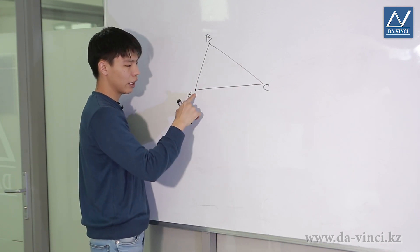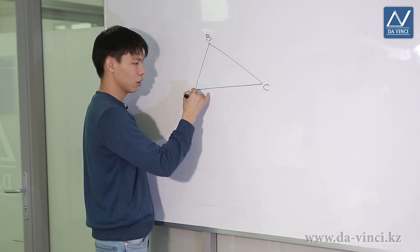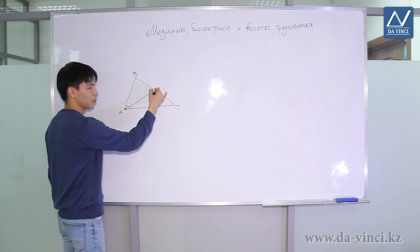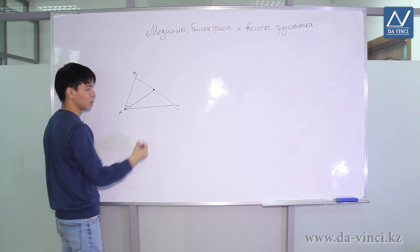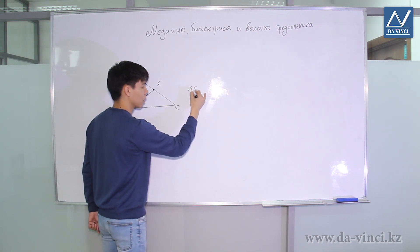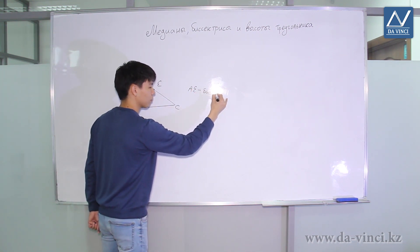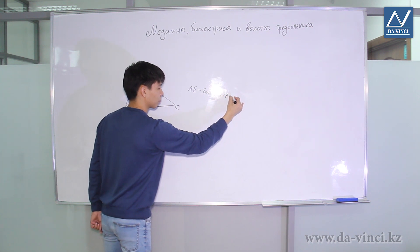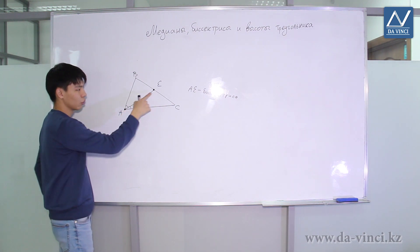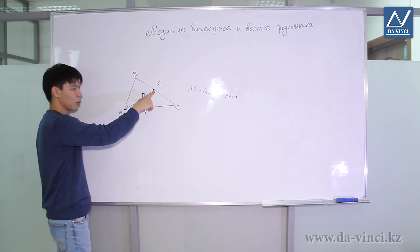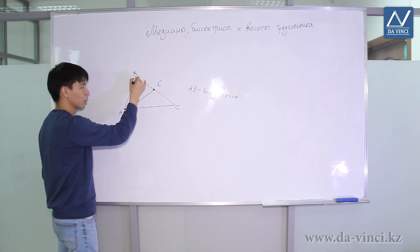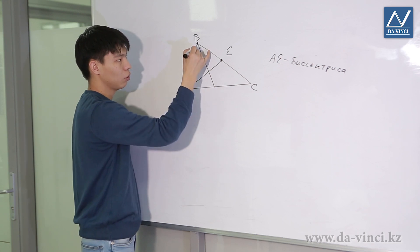That is, if I draw a bisector from point A, it is the ray that bisects angle A. And this bisector intersects the opposite side at some point — let's say E. The segment AE in this case will be called the bisector of the triangle. Thus, the bisector is a segment connecting the vertex of a triangle with the point on the opposite side and dividing the angle in half.